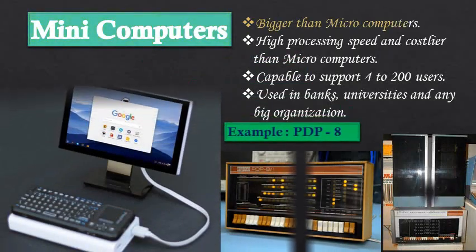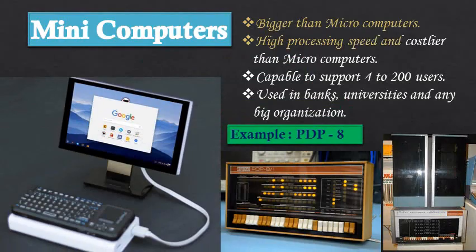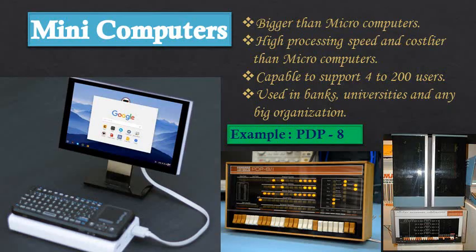Minicomputers. These computers are bigger in size than microcomputers. They have a higher processing speed and are costlier than microcomputers. These computers are capable of supporting 4 to about 200 users simultaneously. They are used in banks, universities, and other large organizations. Example: PGP-8.